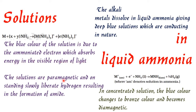The solutions are paramagnetic. When the electrons are unpaired, single, and mobile, that magnetic property is called paramagnetism. If the electrons are paired and not free, they are called diamagnetic. Here, electrons are free — they are ammoniated electrons — therefore they are paramagnetic in nature. On standing, they slowly liberate hydrogen, resulting in the formation of amide.